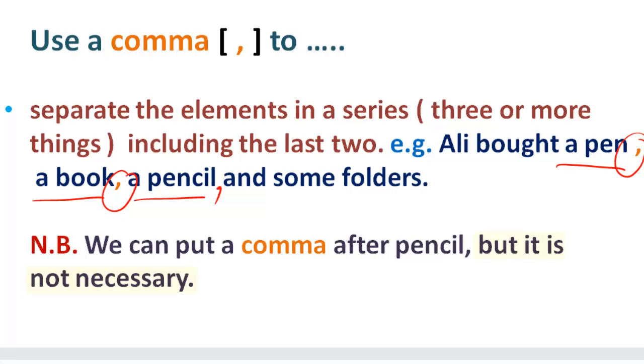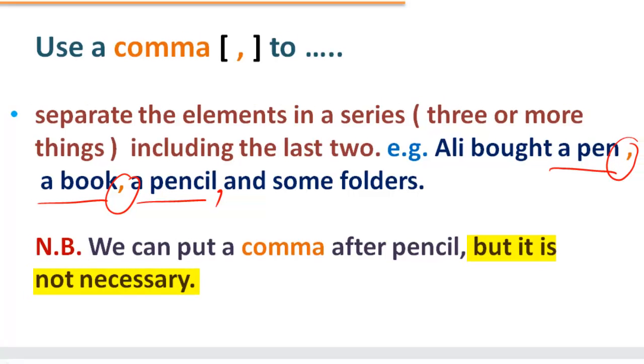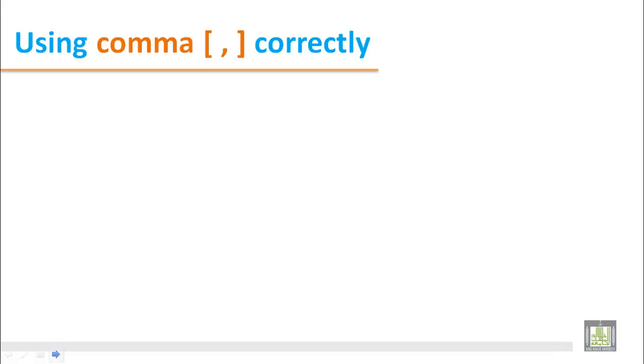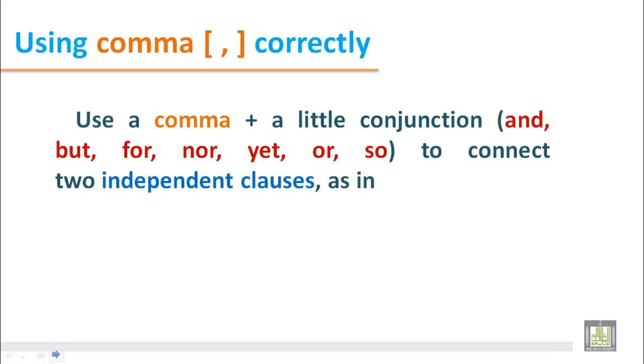Using comma correctly: Use a comma plus a little conjunction. There are some conjunctions we can find in the brackets: and, but, for, nor, yet, or, and so. These conjunctions are used to connect the two independent clauses.